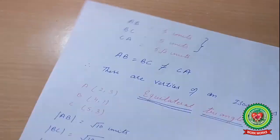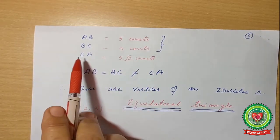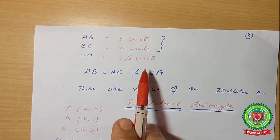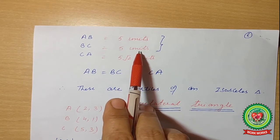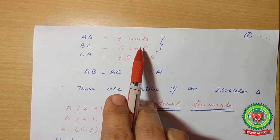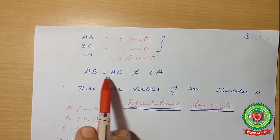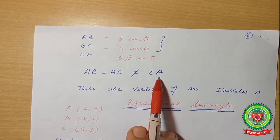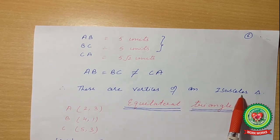Now writing the final results: AB = 5 units, BC = 5 units, CA = 5√2 units. Two sides are equal here. The condition for an isosceles triangle is that two sides must be equal. AB = BC but AB ≠ CA. Therefore, these are the vertices of an isosceles triangle.